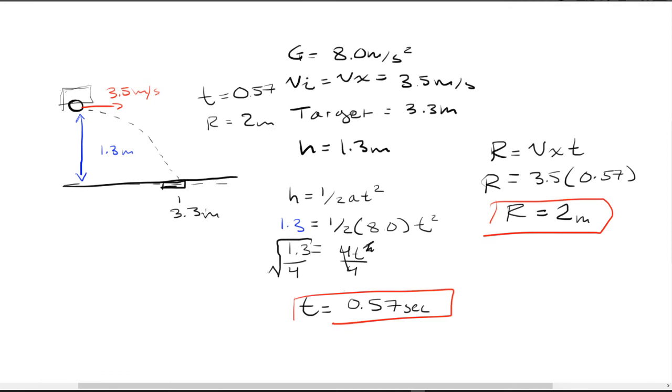And now comes the interesting part. So the target is at 3.3 meters and the range of the ball is going to be 2 meters. So what we want to do is kind of find like a change in r. So it's going to be the target's location, which is 3.3, minus the range of the ball, which is 2.